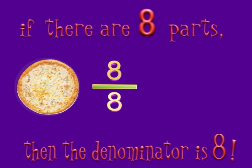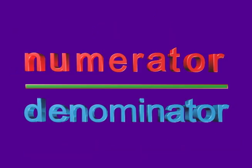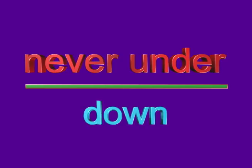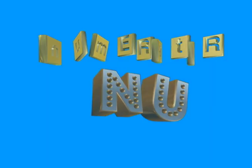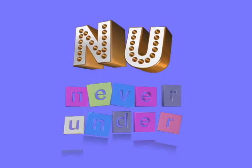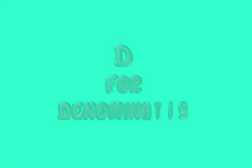The number of parts that there are in one whole, in every old fraction you write. Numerator starts with N, U for never under, N-U for never under. Denominator starts with D — down, D for denominator, D for down. Denominator — the bottom part of a fraction.